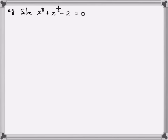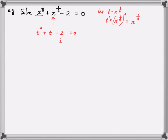In this next example, we have x^(1/3) + x^(1/6) - 2 = 0. We recognize this as a quadratic equation and let the middle term be our new variable. With the change of variable t = x^(1/6), we note that t² = x^(2/6) = x^(1/3), which is the first term. This allows us to rewrite the original equation as t² + t - 2 = 0. The factors are (t - 1)(t + 2) = 0.